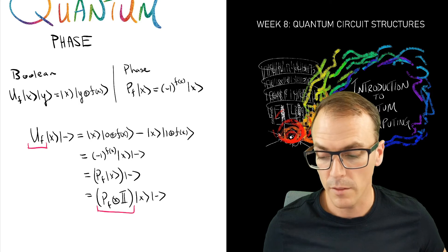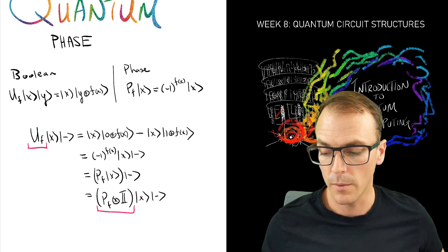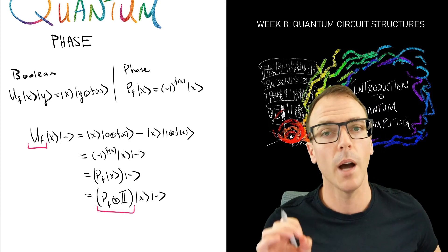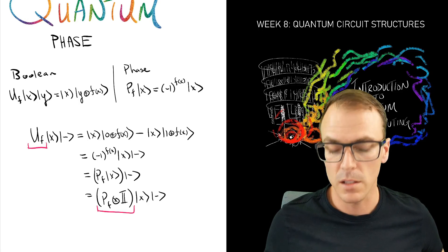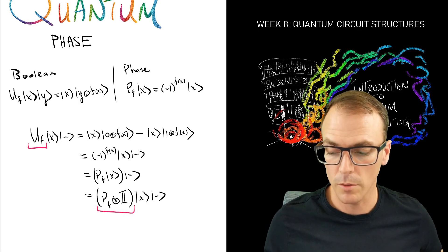So you can see that we have that the action of these two oracles on any state in the first register and the special minus state in the second register is the same.